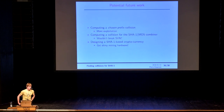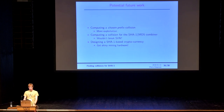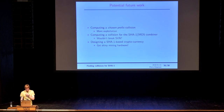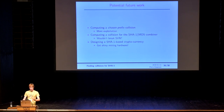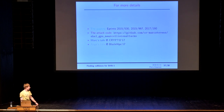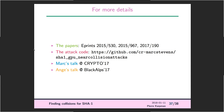In conclusion, what you can do more with SHA-1: you could compute a chosen-prefix collision, which would lead to even more exploitation possibilities. A collision for the combiner SHA-1/MD5 would be nice — then SVN would not be confused as it was. You could also design a SHA-1 cryptocurrency and use the shiny hardware people develop for it. The attack code is finally on GitHub, so you can run it to compute your own collisions. For more details on the crypto side, there is a video of Mark's talk at Black Alps.